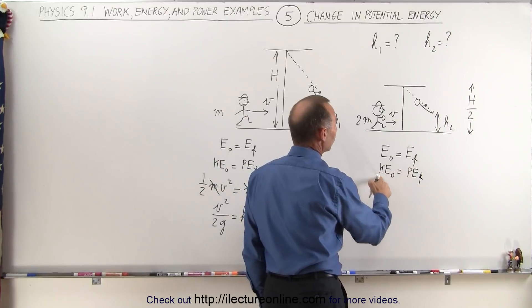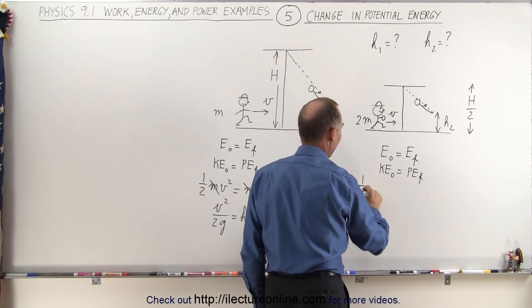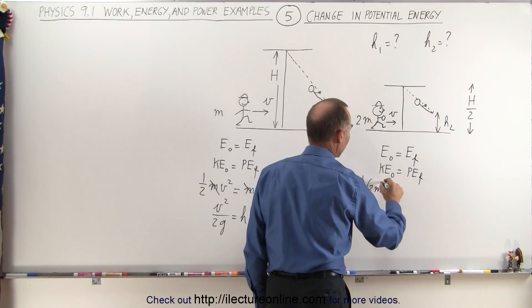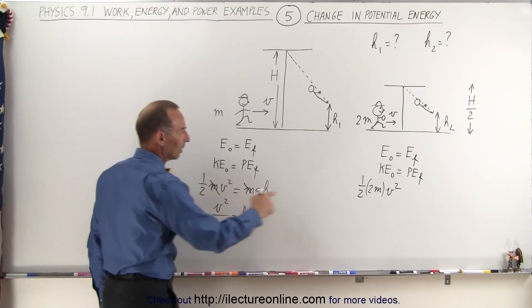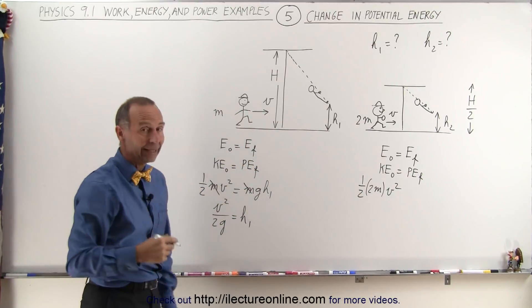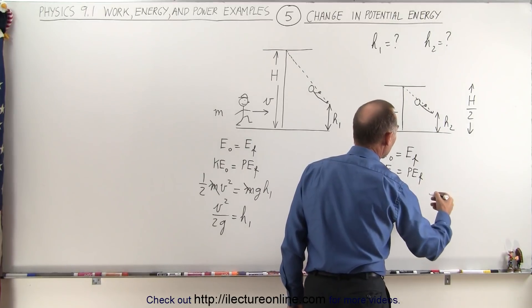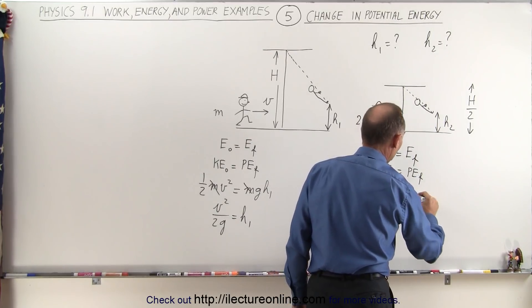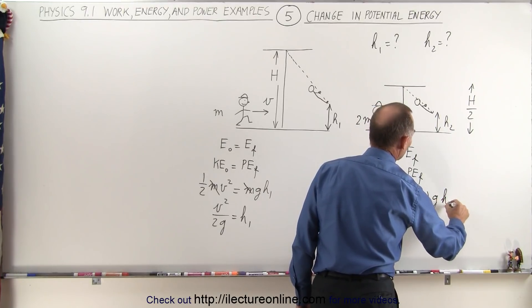Now the initial kinetic energy, the runner has the same velocity but twice the mass, so it would be one-half times 2m times v squared. So the only difference here is that the mass is twice the mass as before. And then the final energy, potential energy, would be mgh, but in this case the mass is twice m, so it would be 2m times g times h2.